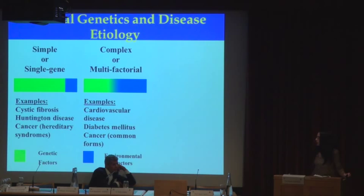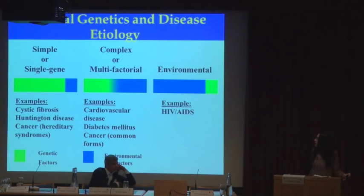In medical genetics, we believe that nearly all diseases in humans are caused by interaction between genetic and environmental factors. Environmental factors play a role in predisposition to single-gene disorders. Similarly, diseases with a major environmental or non-genetic cause — such as HIV infection and AIDS — are impacted by genetic factors in terms of their predisposition, severity, as well as response to treatments.